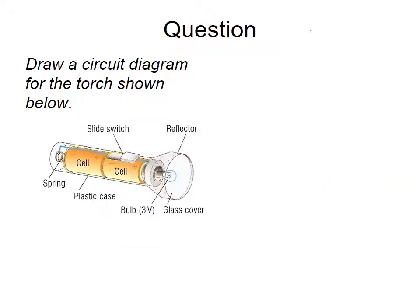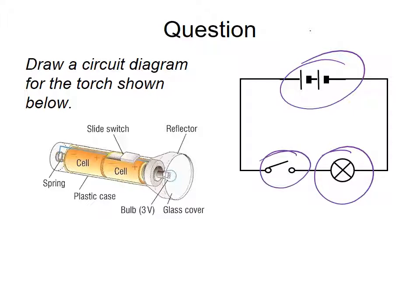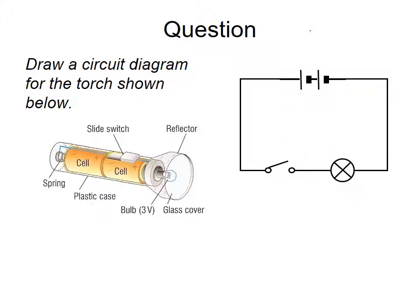Further questioning: draw a circuit diagram for the torch shown. Using your knowledge of circuit symbols, you should have got a diagram with two batteries forming a cell, a bulb at the front, and a switch on the side — those are the three components of the circuit diagram.